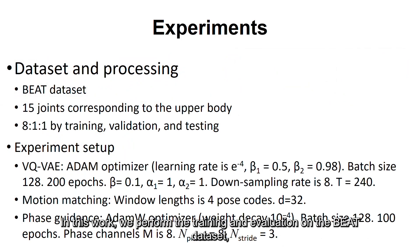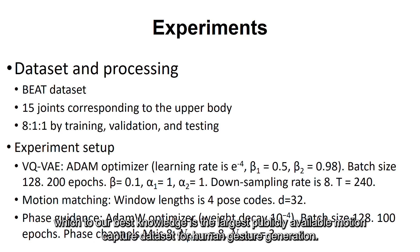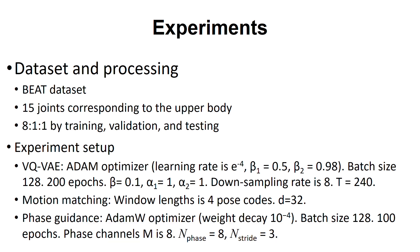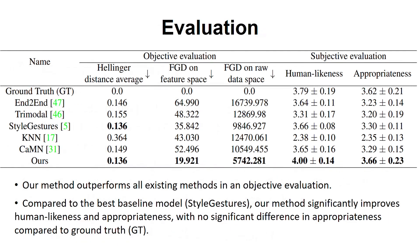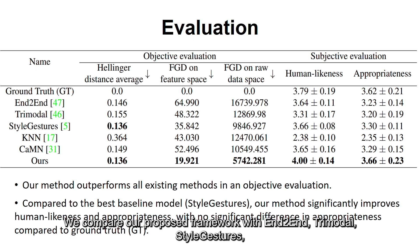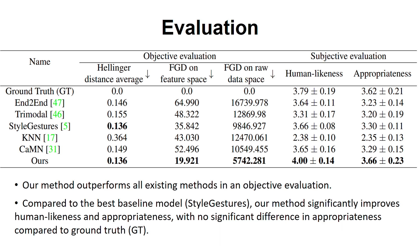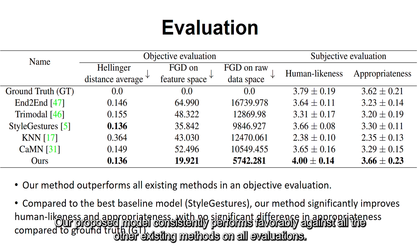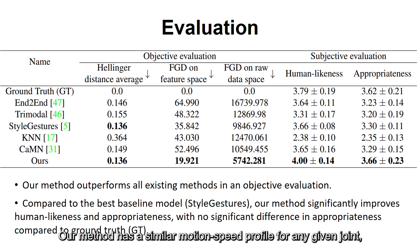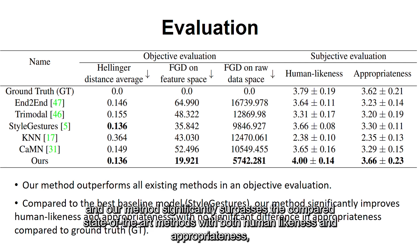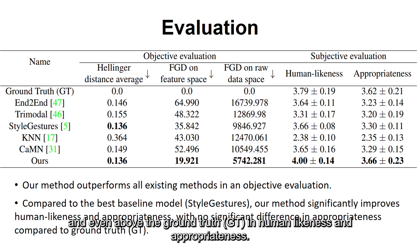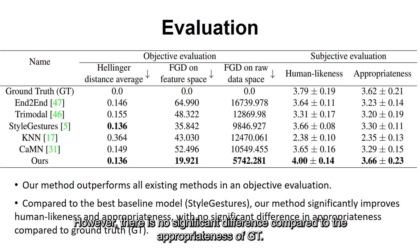We perform training and evaluation on the BEAT dataset, which to our best knowledge is the largest publicly available motion capture dataset for human gesture generation. We use 15 joints corresponding to the upper body without hands or fingers. We compare our proposed framework with N2-end, Trimodal, Style Gestures, KNN, and CMN. Our proposed model consistently performs favorably against all existing methods on all evaluations. Our method has a similar motion speed profile for any given joint, and significantly surpasses state-of-the-art methods in both human likeness and appropriateness, even above the ground truth in human likeness.